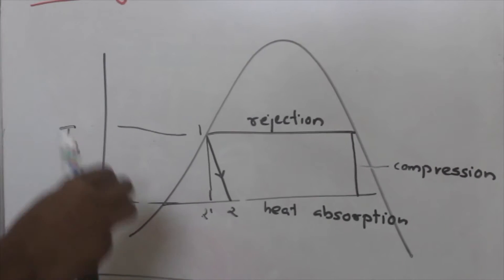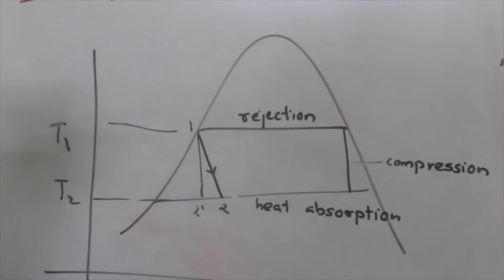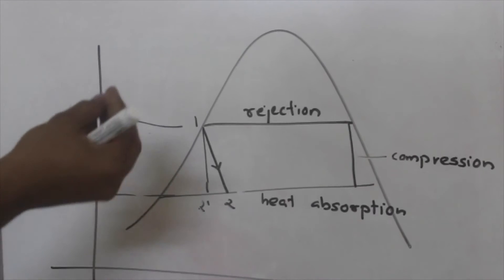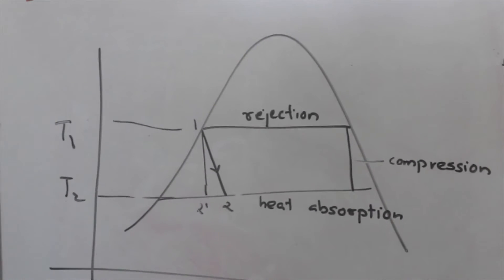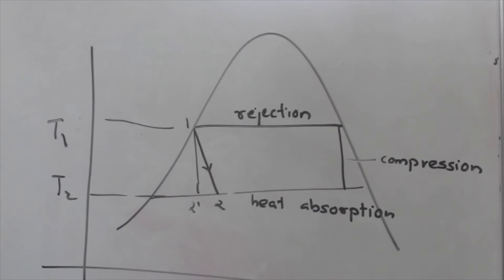So that is what we call as flashing - because of the vaporization of part of the liquid, there will be some decrease in the temperature. That is what we call as flashing and it occurs during the throttling process. Thank you.